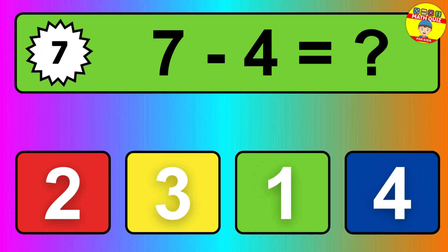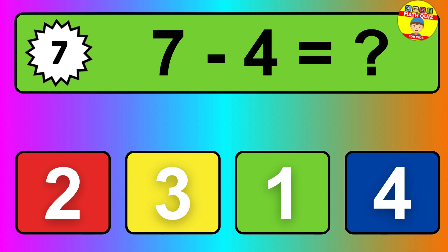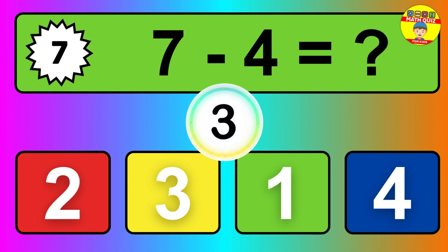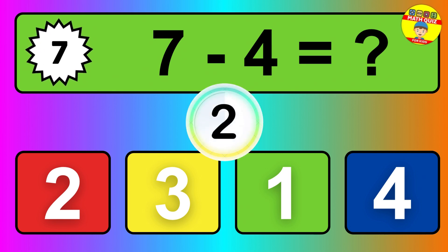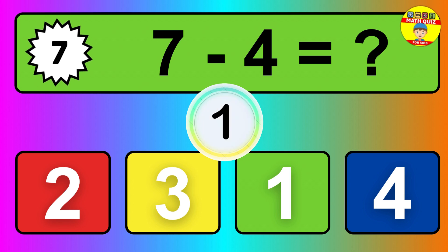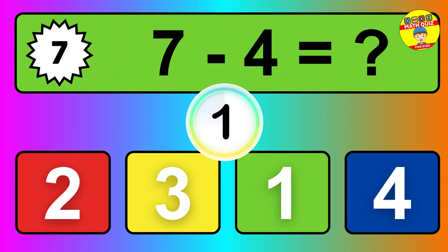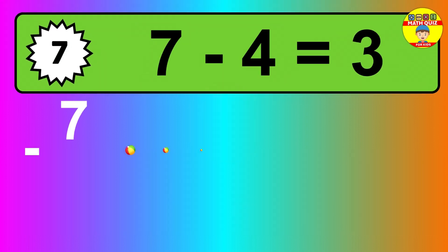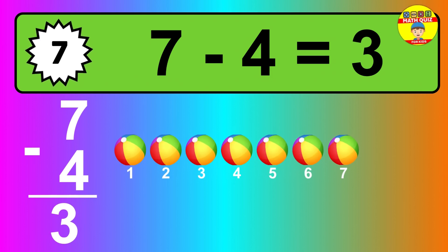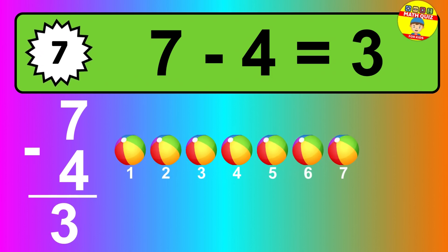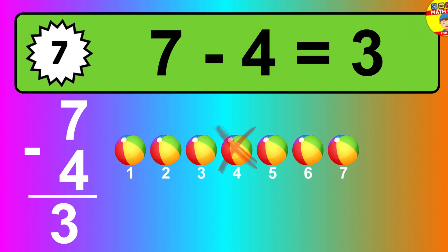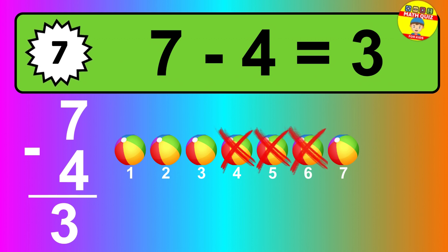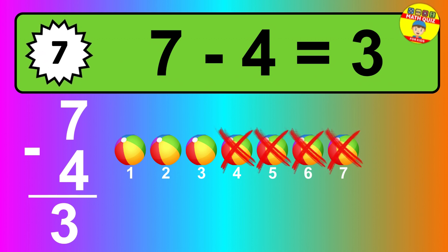Question 7. 7 minus 4 equals what? So the answer is 7 minus 4 is 3. Let's count it. 1, 2, 3.